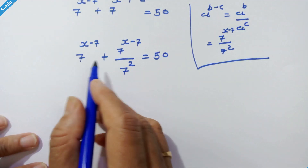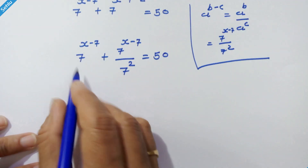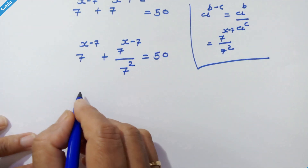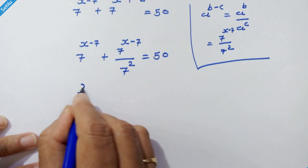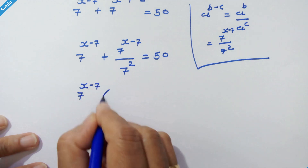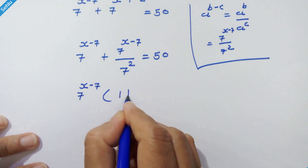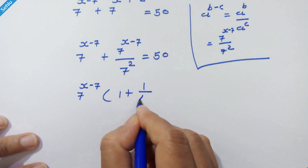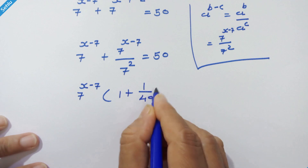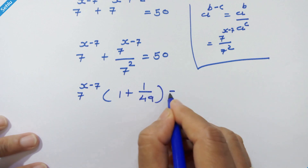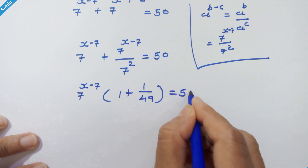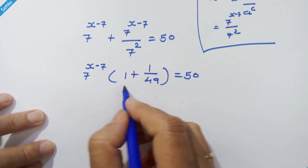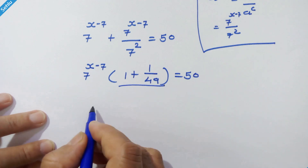Here we can take common 7 raised to x minus 7, giving us 7 raised to x minus 7 into 1 plus 1 upon 49 is equal to 50. Now here we can take LCM.